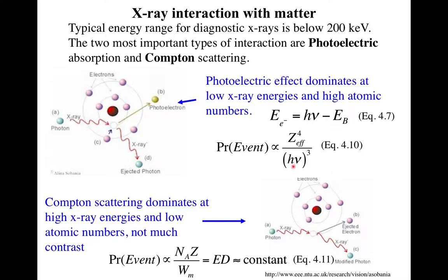The energy dependence of these two effects: the probability of a photoelectric interaction goes as atomic number to the fourth power divided by energy cubed (Z⁴/E³). So lower-energy photons have a much higher probability of photoelectric interaction; higher-energy photons have much less. For Compton scattering, the probability goes as the atomic number — basically the density of the electron cloud.